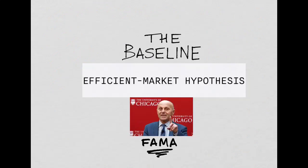The baseline model — a model that defends that there are no imperfections in financial markets — is known as the Efficient Market Hypothesis, and it was created by Fama, a professor at the University of Chicago and a recent Nobel laureate in economics.